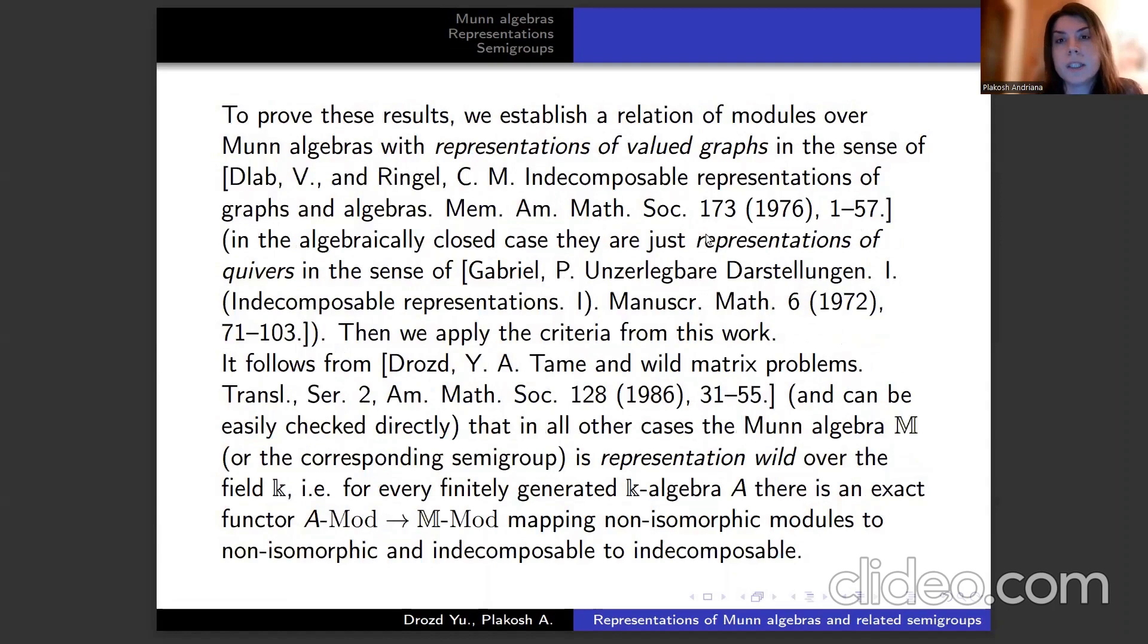To prove this result, we establish a relation of modules over Munn algebras with representations of valued graphs in the sense of Dlab and Ringel. In the algebraically closed case, they are just representations of quivers in the sense of Gabriel. Then we apply the criteria from this work.